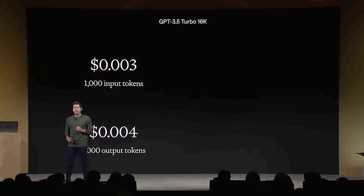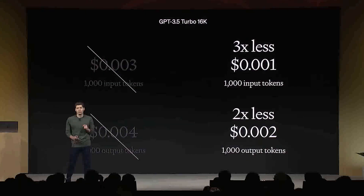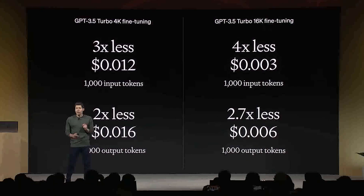It wasn't just GPT-4 Turbo getting release updates. GPT-3.5 Turbo now also supports a 16,000 context window by default. The new GPT-3.5 Turbo model supports improved instruction following, JSON mode and parallel function calling, as well as reduced pricing across the platform, making it great for people who want to play around with some of the models before upgrading to all the features of GPT-4.